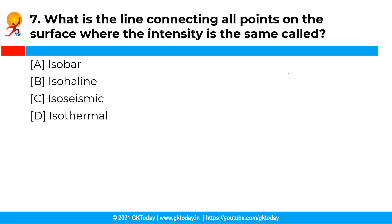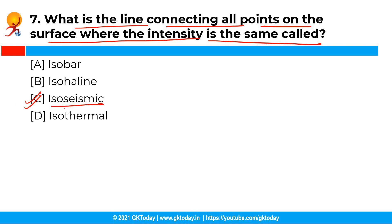The next question is: what is the line connecting all points on the surface where the intensity is the same called? You have the following options and the correct answer is option C, that is isoseismic. Basically, the isoseismic line is the line connecting all the points on the surface where intensity is the same.